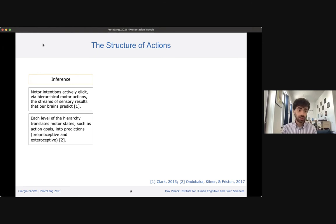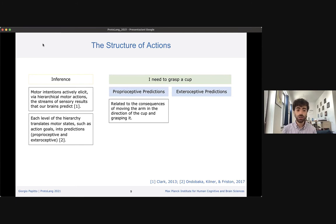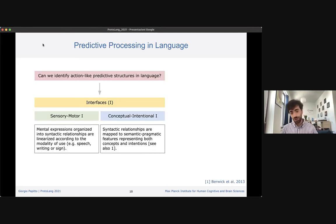These predictions can be of two main types: proprioceptive and exteroceptive predictions. If we go back to grasping a cup, a proprioceptive prediction would be related to the consequences of moving my arm towards the cup in order to grasp it. An exteroceptive prediction would be related, for example, to the location of the cup with respect to my hand. I want to go back quickly to the interfaces. Merge needs to work in collaboration with other systems: the sensory motor interface and the conceptual intentional interface.